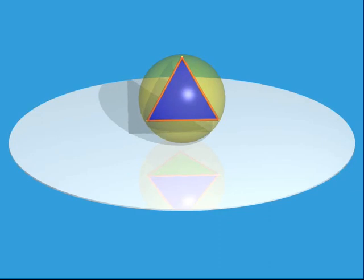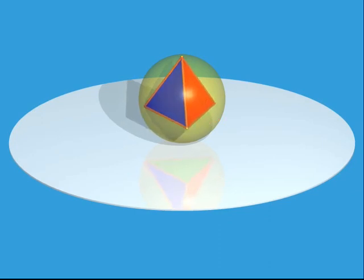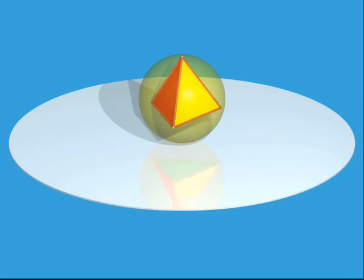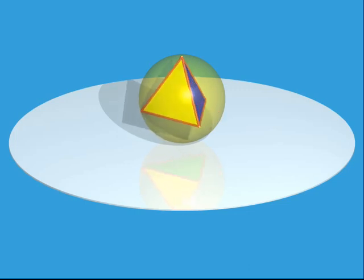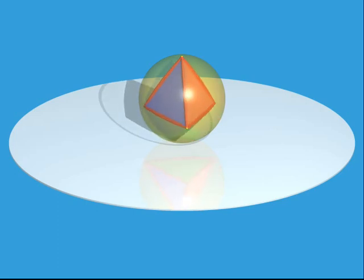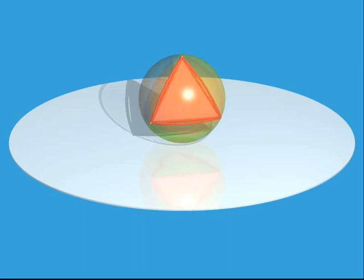To get a better understanding of four-dimensional polyhedra, we can do just what the lizards did with the three-dimensional polyhedra. We first inflate them so that they lie on a sphere, and then project this stereographically onto the plane.